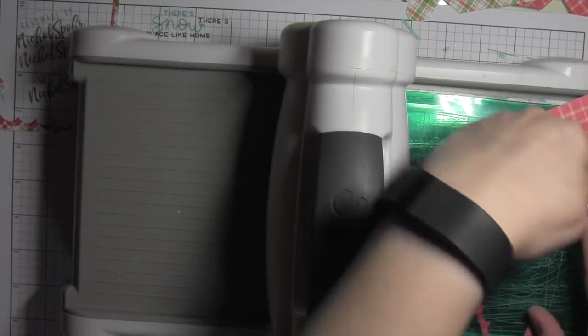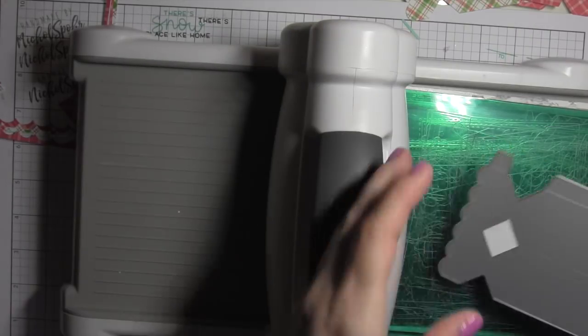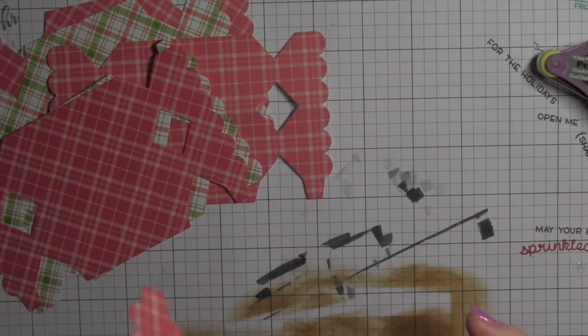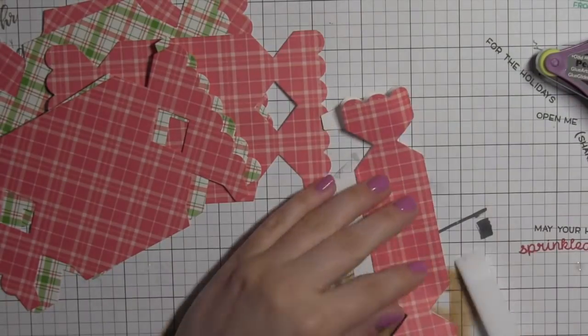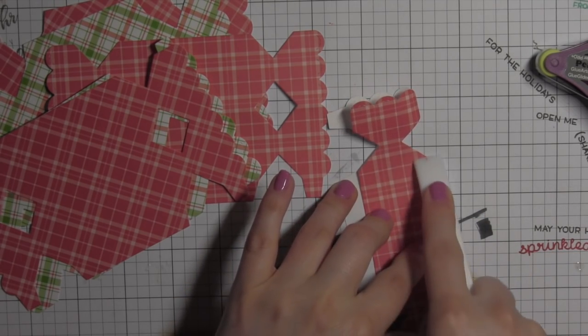I'm going to be decorating each of the boxes with a stitched label stamped with a sentiment, and then I'm going to be adorning it with a reindeer that has been stamped, colored, and die cut.